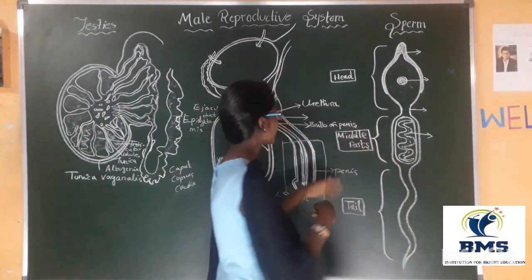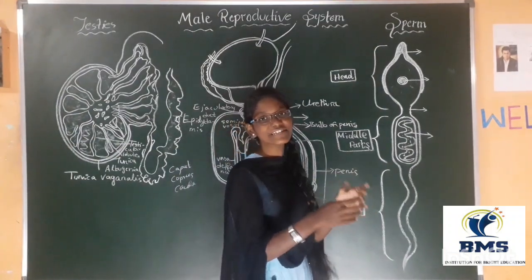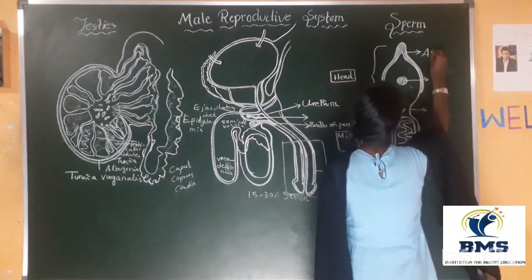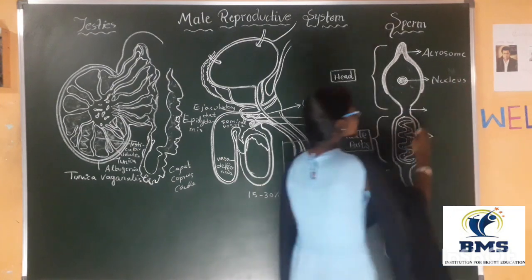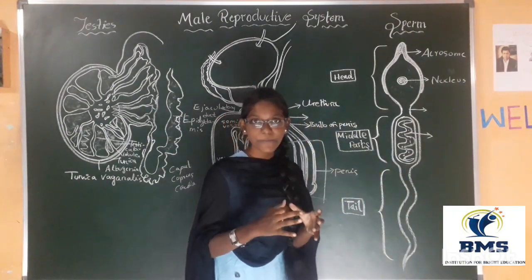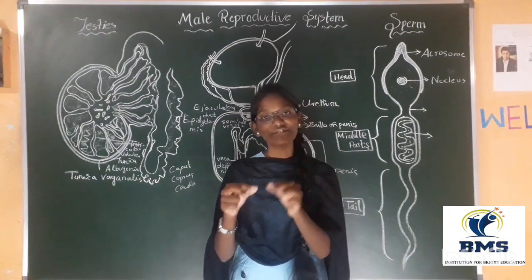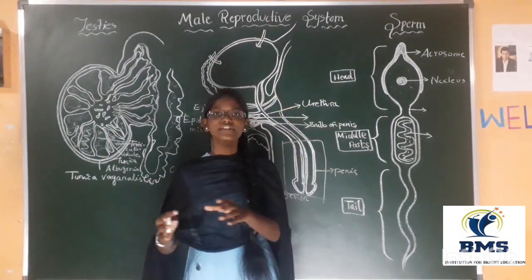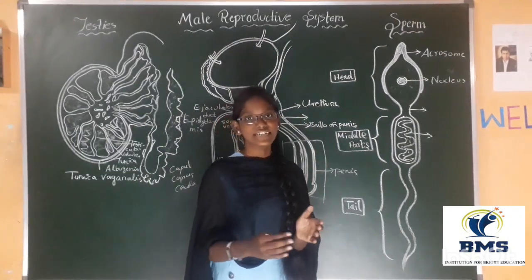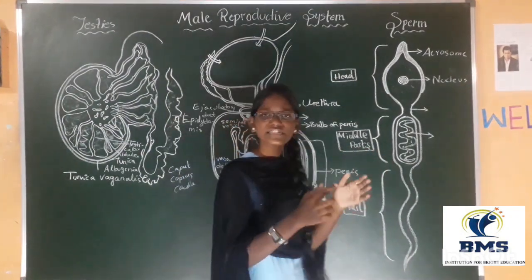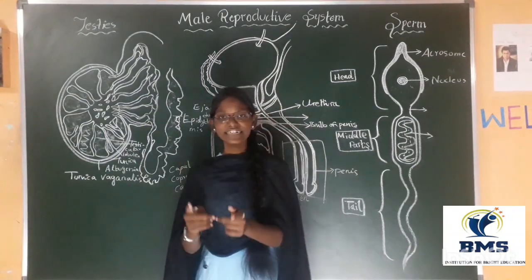The three parts are head, middle part, and tail. In the head it includes two parts: the acrosome and the nucleus. The acrosome is very helpful for giving protection to the nucleus. It also helps the sperm to penetrate into the ovum, and it has some enzymes like acid phosphatase. Coming to the nucleus — it contains genetic material.